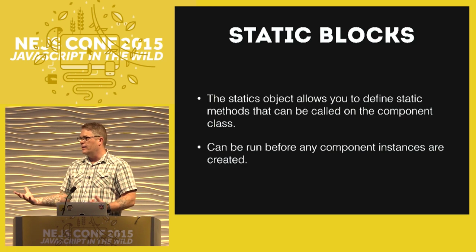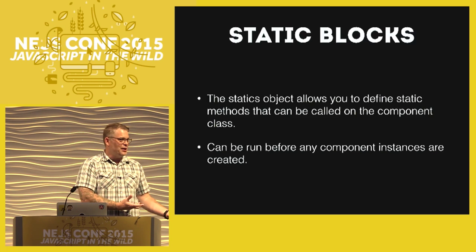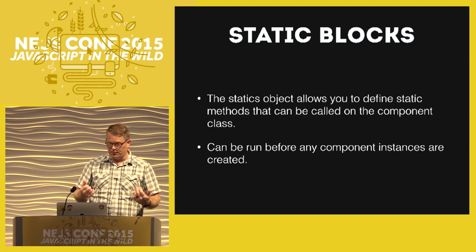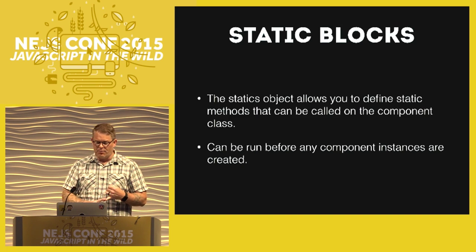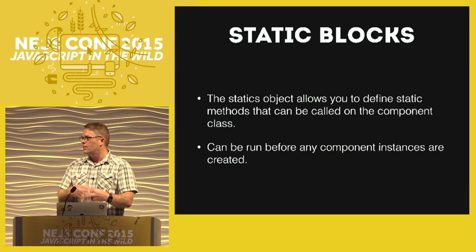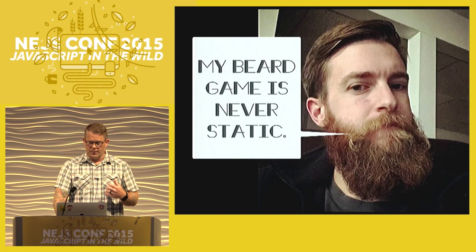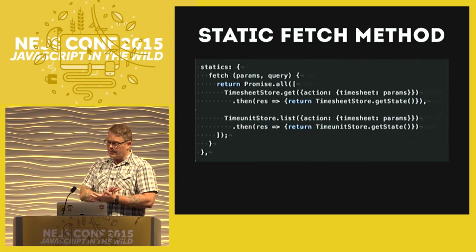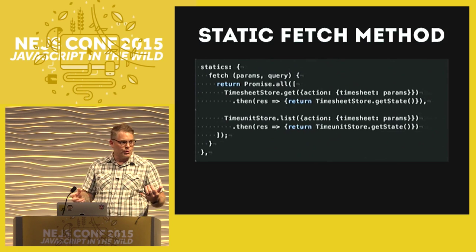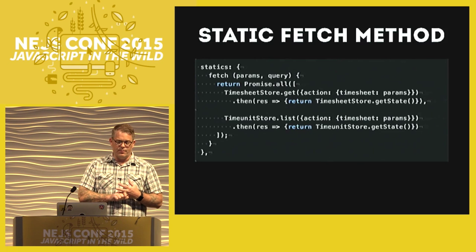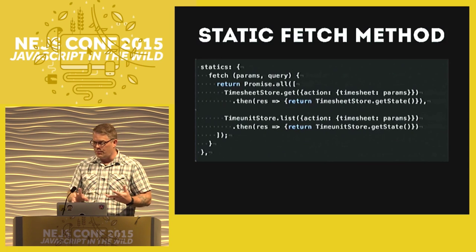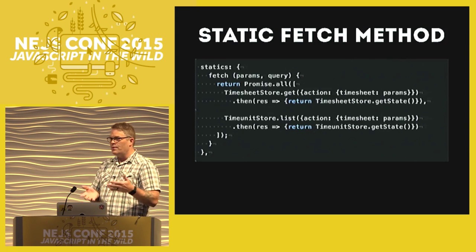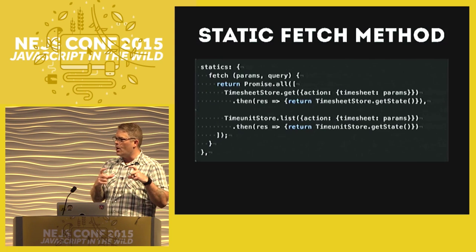How do we call methods on a React component? You can't call anything on a React component instance unless it's been created, and if it's been created it's already too late to pre-initialize it with data. React has a notion of statics - the statics object allows you to define static methods that can be called on the component class before the React factory does its work. The static fetch method lives in your statics block; this component makes two calls to a database, calling the timesheet store and time unit store get and list methods, returning a promise as well. So promises call other promises, resolving into one single array.